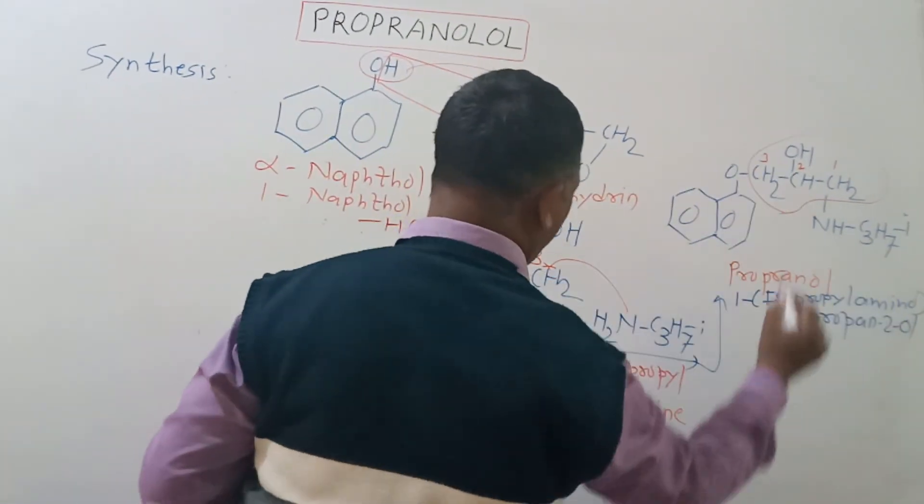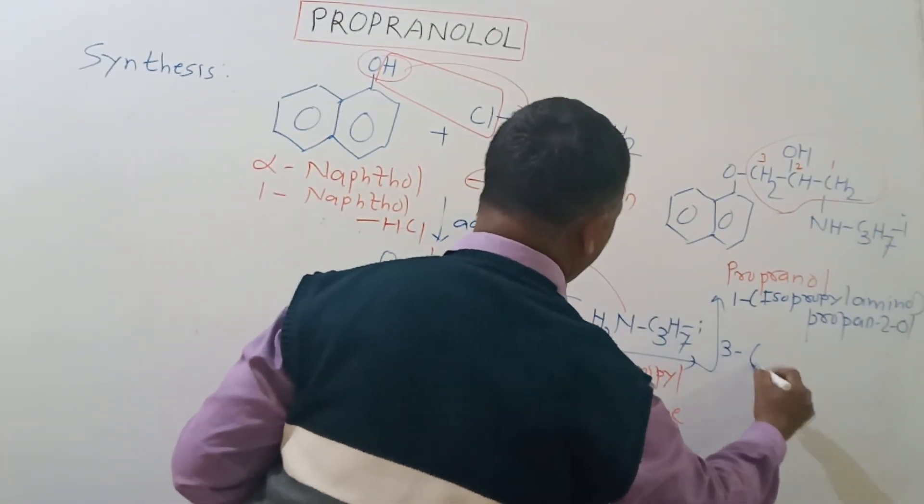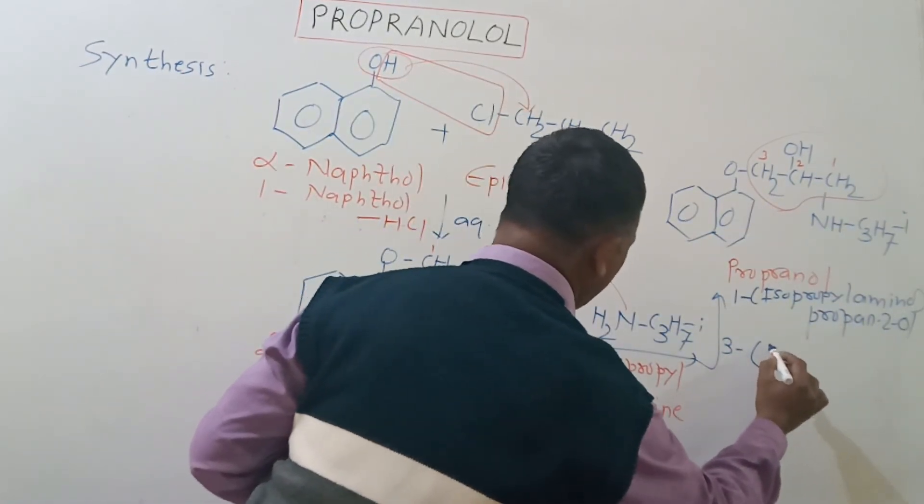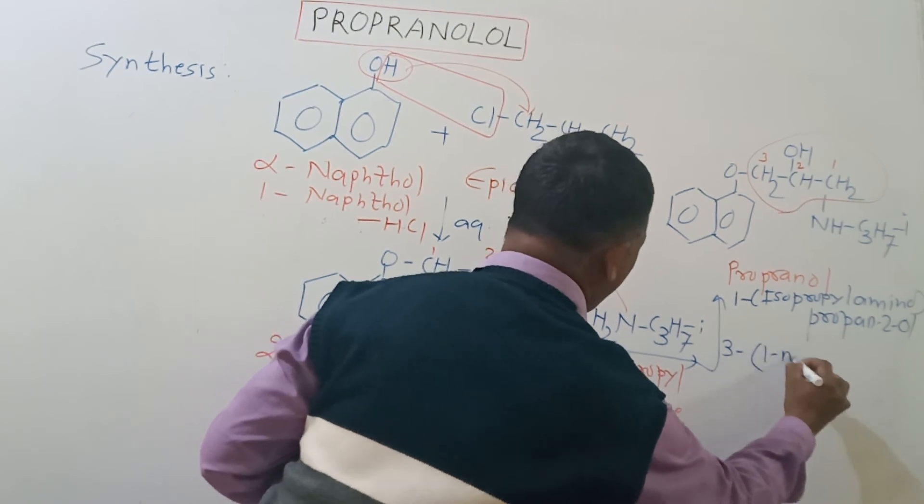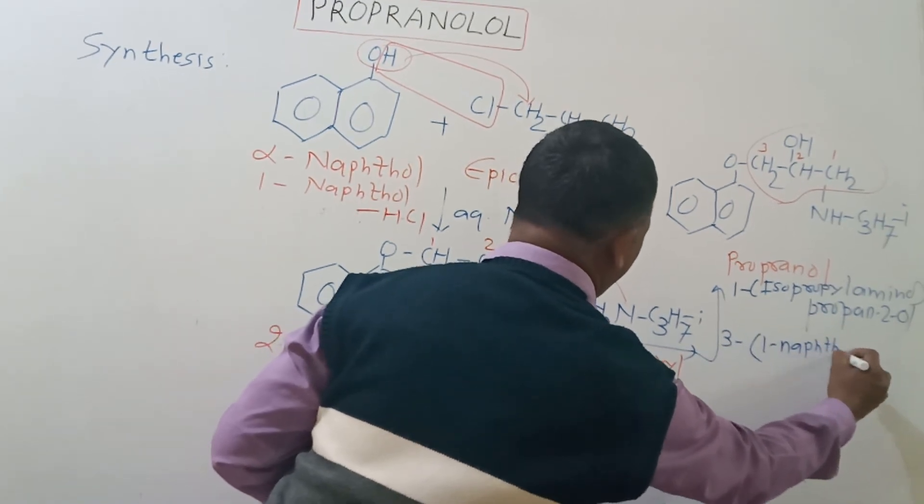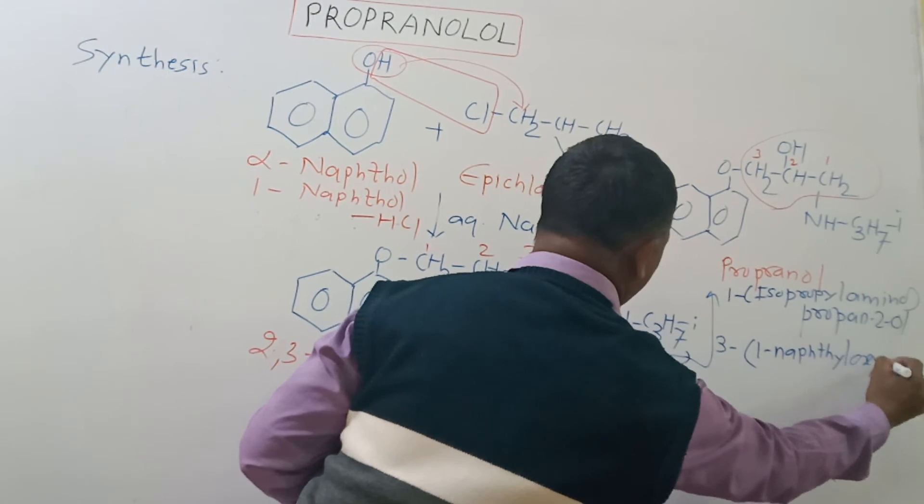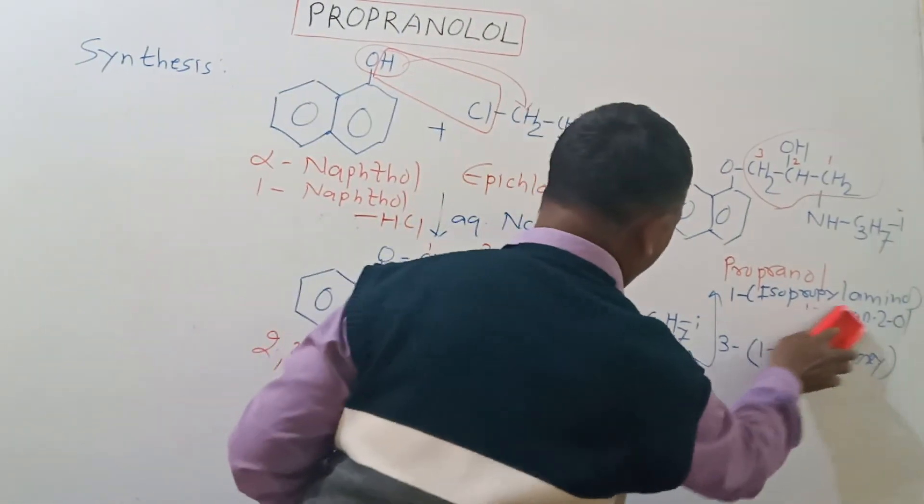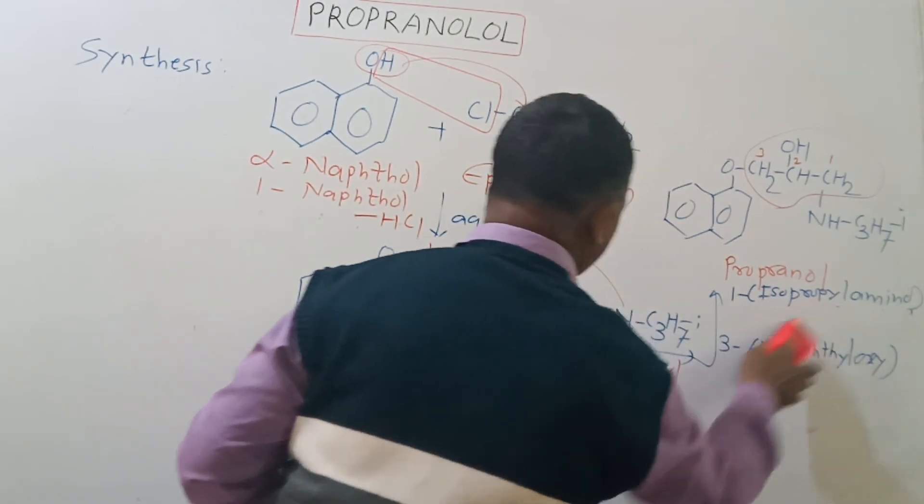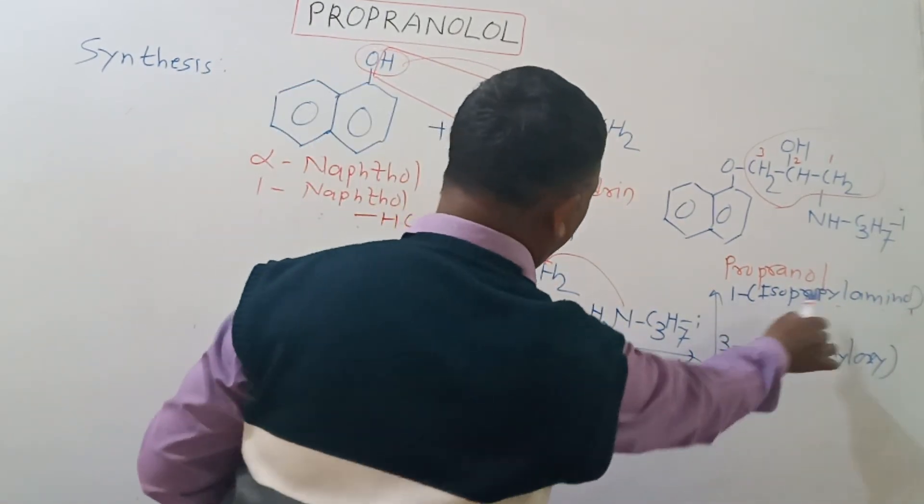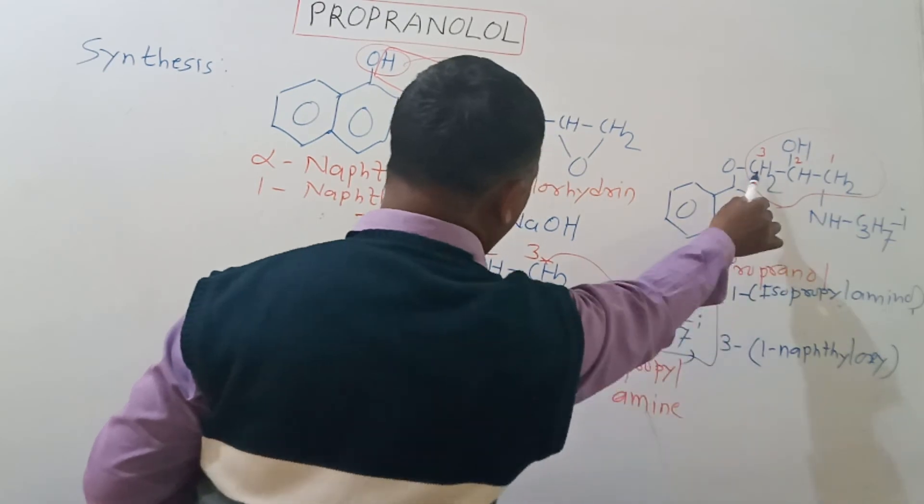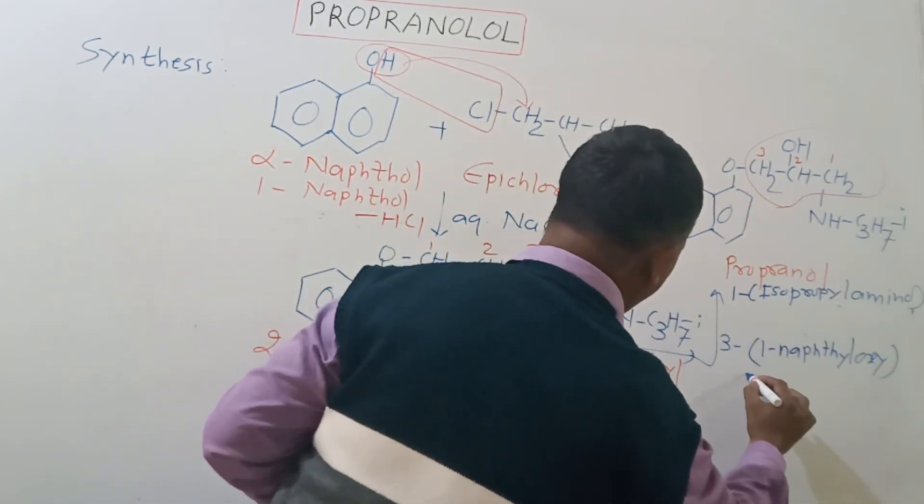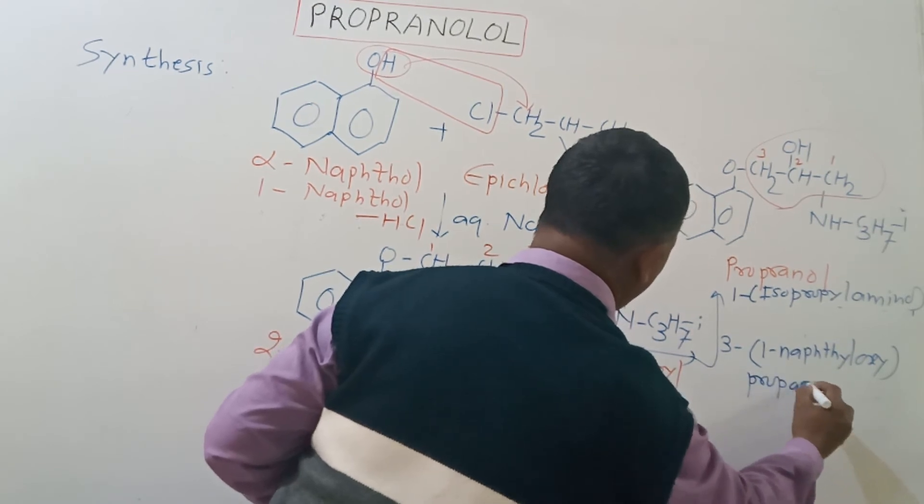On position number three we have this naphthalene ring attached with oxygen, so we will call it 1-naphthaleneoxy. So both substituent groups - on one isopropylamino, on three we have 1-naphthaleneoxy - followed by the name propane-2-ol.